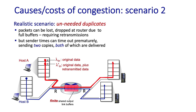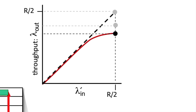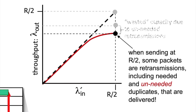Now let's drop the assumption that all retransmissions are needed. If the sender times out prematurely and delivers two copies of a packet to the receiver, the first packet is delayed, the sender retransmits, and both packets make it to the receiver. The receiver only delivers one segment's worth of data to the application layer, even though two duplicate segments were received. With these unneeded retransmissions, there are more overall retransmitted segments — some needed, some duplicates — and the maximum throughput drops even further.